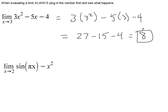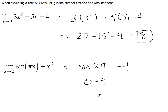For this one, plug in x equals 2 and you end up with the sine of 2π minus 4. The sine of 2π is 0, and 0 minus 4 is negative 4. Easy enough.